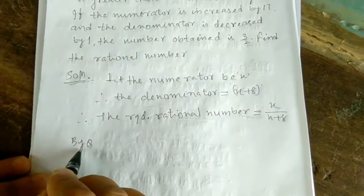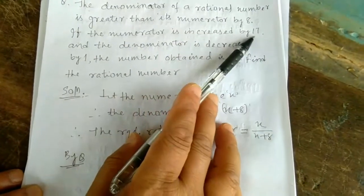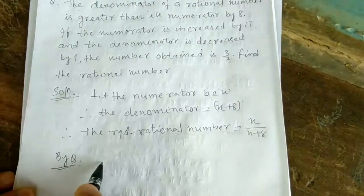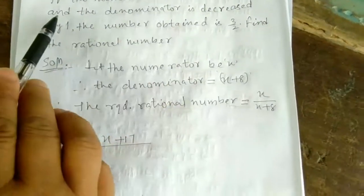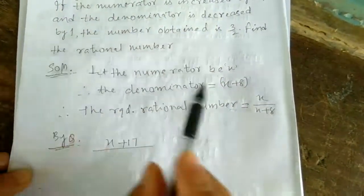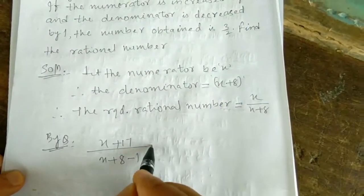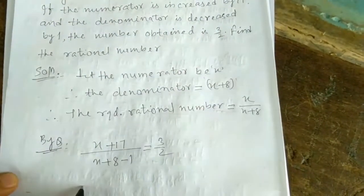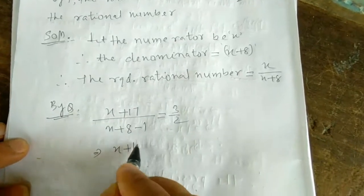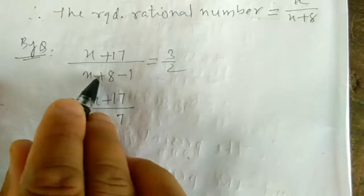By the question: if the numerator is increased by 17 (numerator becomes x + 17) and the denominator is decreased by 1 (denominator becomes x + 8 − 1 = x + 7), then the number obtained is 3 by 2. So (x + 17) / (x + 7) = 3/2.